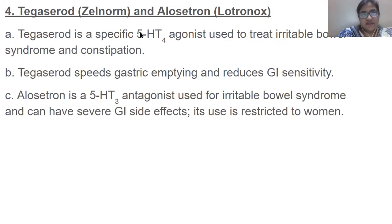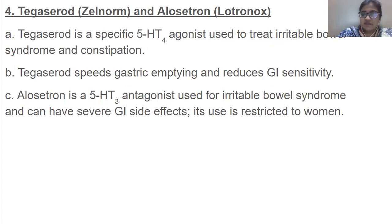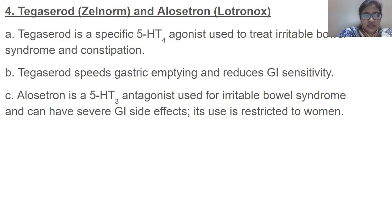Then we have tegaserod and alosetron. Tegaserod is a specific 5-HT4 agonist used to treat irritable bowel syndrome and can have severe GI effects. Its use is restricted to women.